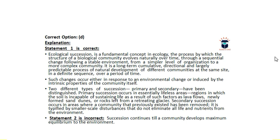Primary succession occurs when a lifeless area is occupied — regions where soil is incapable of sustaining life — resulting from factors such as lava flows, newly formed sand dunes, or bare rocks. Secondary succession occurs when an existing community is removed due to disturbance, such as a forest fire. The disturbance doesn't eliminate all life or nutrients, so certain life forms and nutrients remain, and subsequent species come to occupy the area. Statement two is incorrect — succession continues until a community develops maximum equilibrium with the environment.